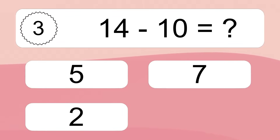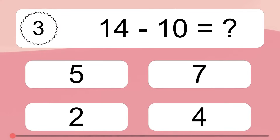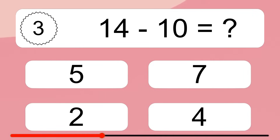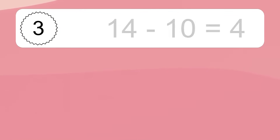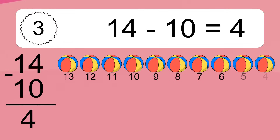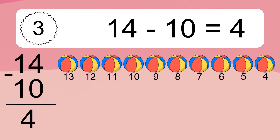14 minus 10 equals what? 14 minus 10 equals 4. Let's count it. 13, 12, 11, 10, 9, 8, 7, 6, 5, 4.